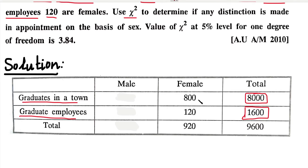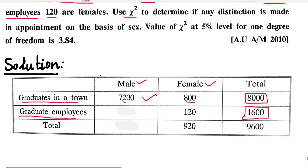In the 8000 graduates, we have two categories. We have 800 females, so we have 8000 minus 800 equals 7200 males. For the 1600 graduate employees, we have 120 females, so 1600 minus 120 equals 1480 males.